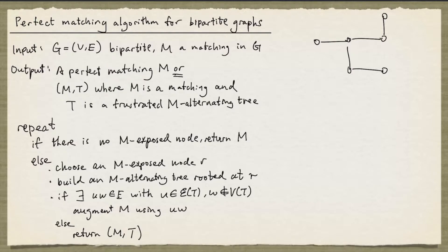The steps for building an M-alternating tree have been discussed in the previous video. Next, we try to find if there is an edge Uw such that U is in the even set of the tree and W is not a node in the tree. We saw that the M-alternating path from R to U together with Uw will form an M-augmenting path, and so we can augment our matching. Otherwise, we return the pair M, T.